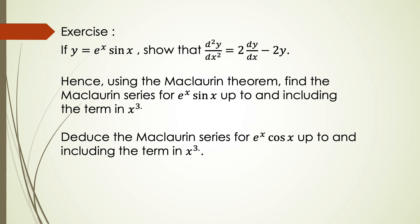Exercise: If y equal to e^(−2x) multiplied by sin(x), ensure that d²y over dx² equal to 2 dy over dx minus 2y. Hence, using the Maclaurin theorem, find the Maclaurin series for e^x multiplied by sin(x) up to and including the term in x³. Also find the Maclaurin series for e^x multiplied by cos(x) up to and including the term in x³.